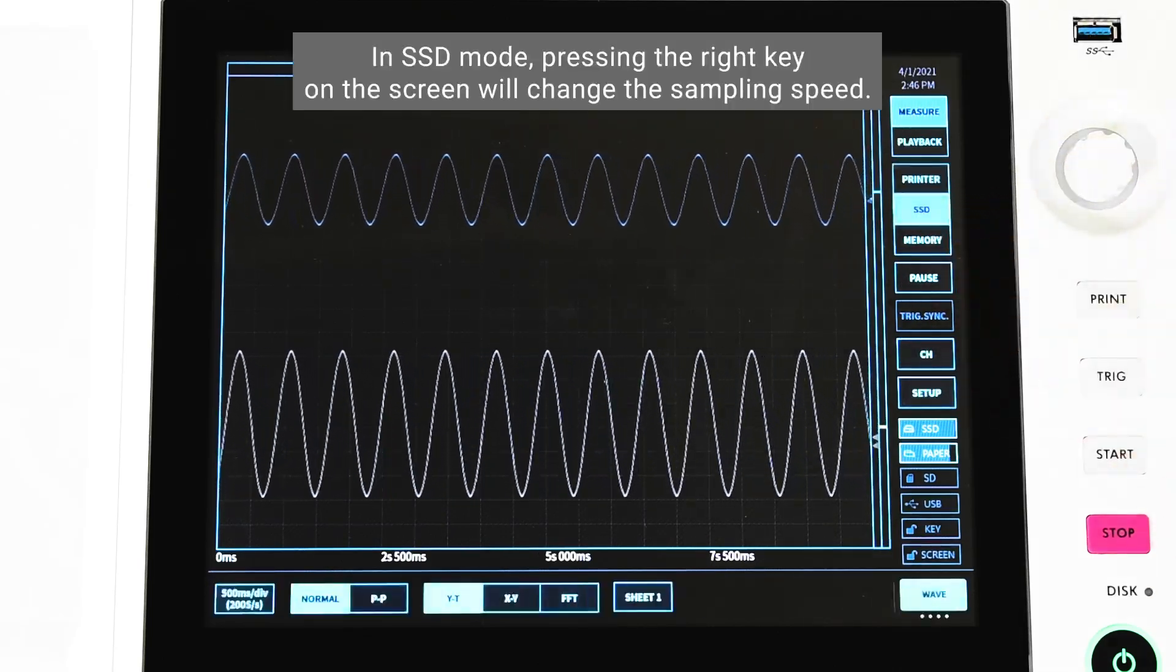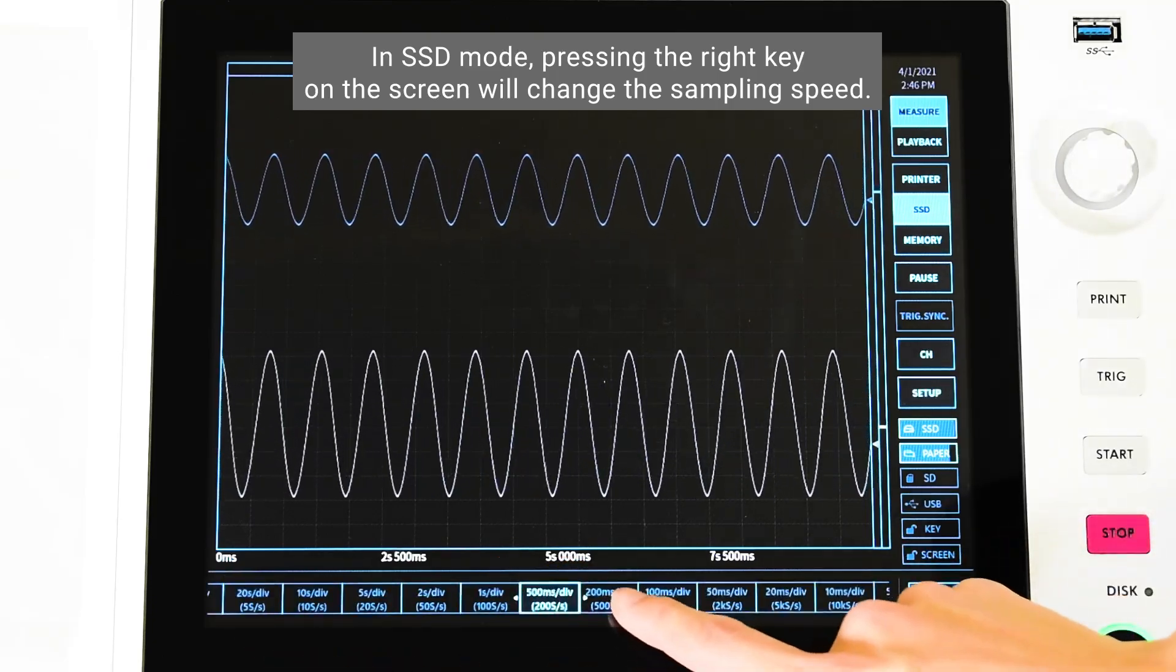In SSD mode, pressing the right key on the screen will change the sampling speed.